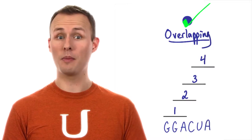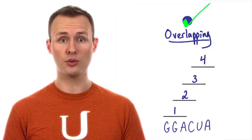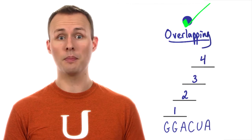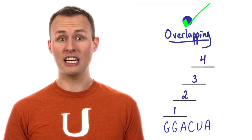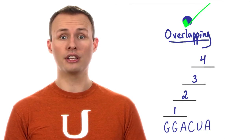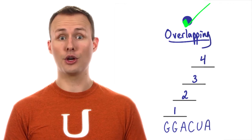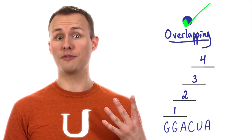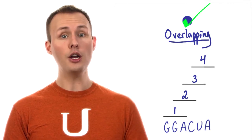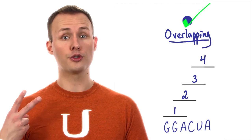It turns out that the overlapping model is the most efficient for information storage. Now the reason why is pretty simple. If we look at our six bases in the RNA code here, in the overlapping model, those six bases could code for four different amino acids. But in the non-overlapping model, we can only code for two.